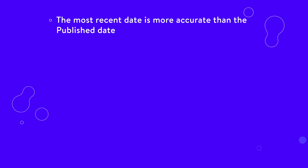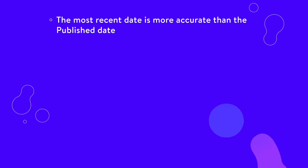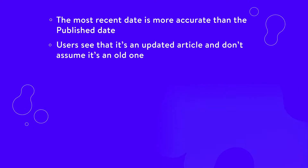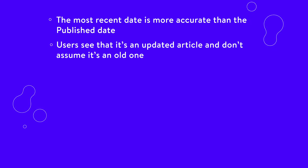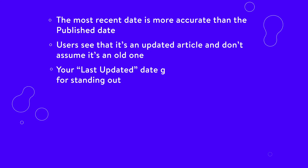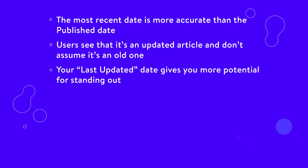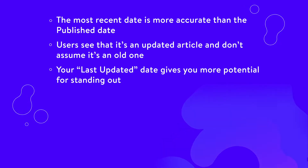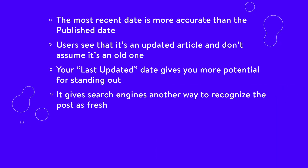The most recent date is more accurate than the published date, and it shows that your content is probably more refreshed when compared to something that was published a while ago. Users see that it's an updated article and don't assume it's an old one, potentially increasing your click-through rates and the overall time users spend reading. Your last updated date gives you more potential for standing out since search engines display those dates in the results, and your results get placed right by listings from other sites.